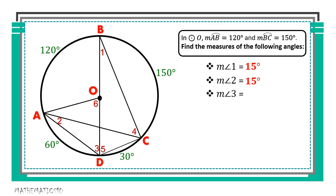For the measure of angle 3, angle 3 is the same as angle ADB. The intercepted arc of angle 3 is arc AB. Since angle 3 is an inscribed angle, we apply the inscribed angle theorem again: the measure of the inscribed angle is half the measure of its intercepted arc. Since arc AB is 120 degrees, we take half of 120 degrees, giving us 60 degrees.